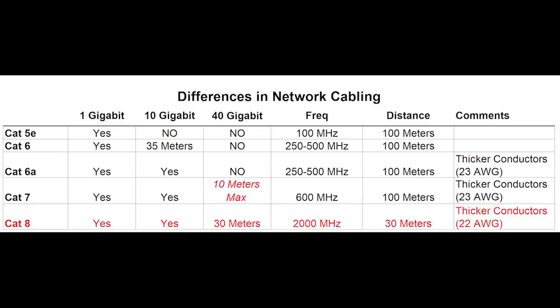CAT 8, 7, and 6a are all backwards compatible down to one gigabit. My personal opinion on what cable to run: I would probably look at CAT 6a. It gives you 10 gigabit performance, which for most of us is the sweet spot. CAT 6 will support 2.5 gigabit, which is becoming very popular, but if you're planning for the future I would suggest CAT 6a or CAT 7.